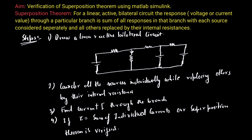Let's see the steps to verify the superposition theorem. First, we have to draw a linear active bilateral circuit — one that has linear elements, at least one active source, and bilateral elements where the impedance is the same in both directions.